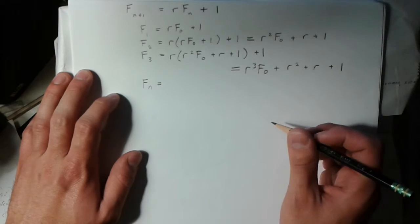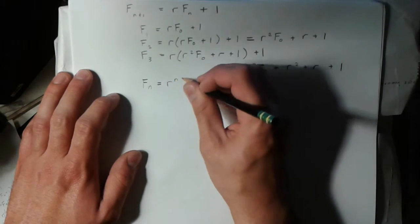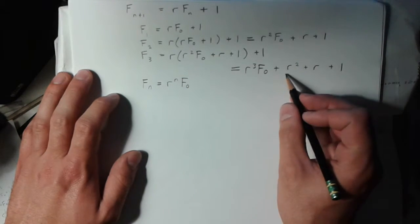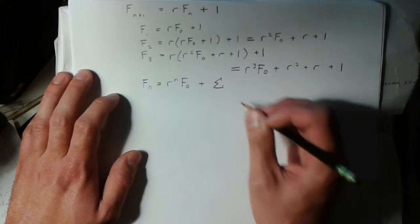If we're going to guess the nth term, I would say that it would be r to the n times f0. And then we have this trailing polynomial here, which I can just write as a summation.